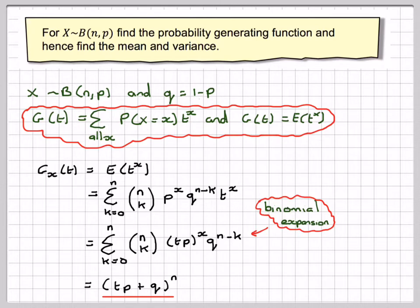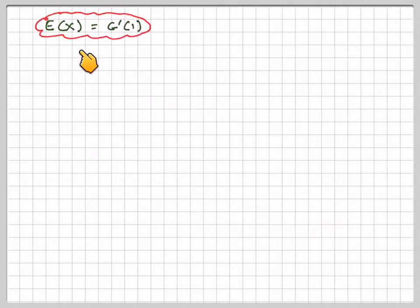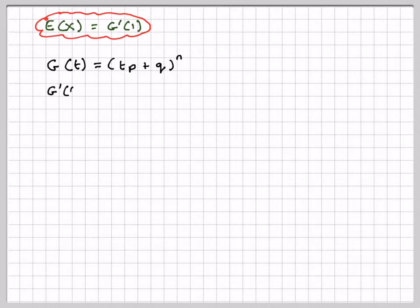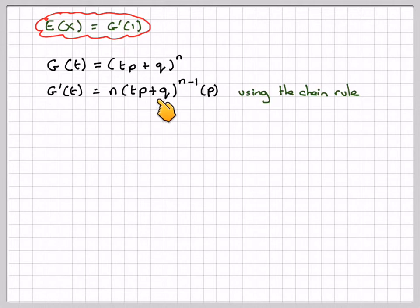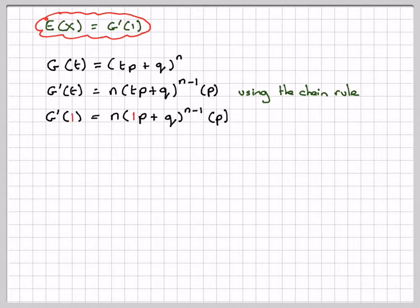Now we can use this to find the mean and the variance. E[X] equals g'(1). But g(t) equals (tp + q)^n, so g'(t) will be n times (tp + q)^(n-1), multiplied by p — using the chain rule. Therefore g'(1) is going to be n times (1·p + q)^(n-1) times p. Now p + q by definition is equal to 1.